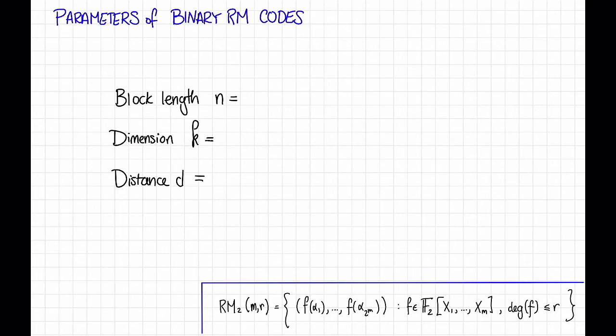Okay, so the block length is 2 to the M. That is, this vector has length 2 to the M.